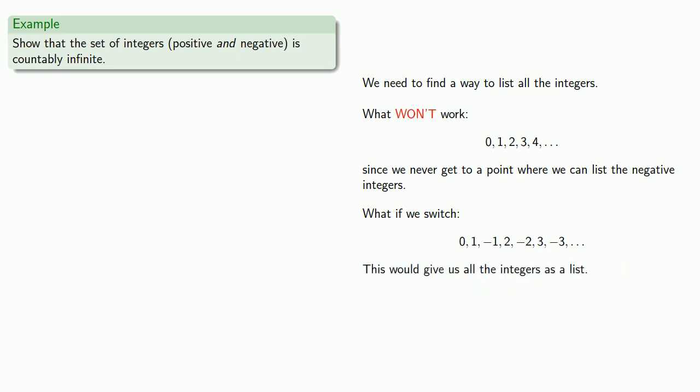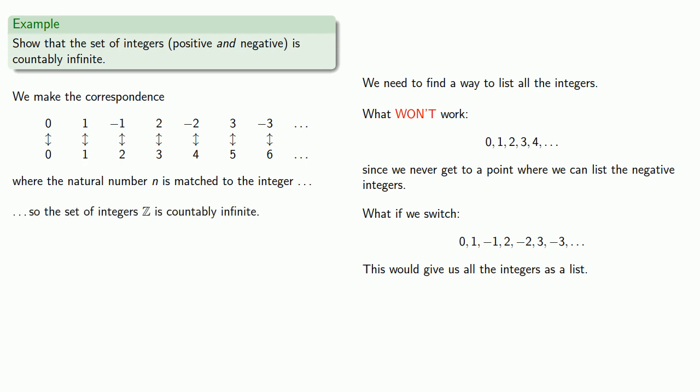And this would give us all of the integers as a list. And so we have our list of integers. We make the correspondence with the set of natural numbers. And here the natural number n is matched to the integer. Well, I won't do all your homework for you. But the important thing is that we do have this one-to-one correspondence, so the set of integers is countably infinite.